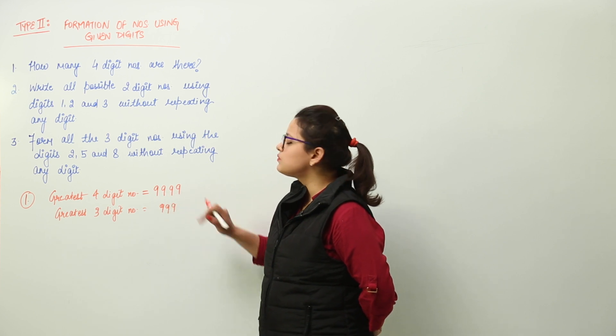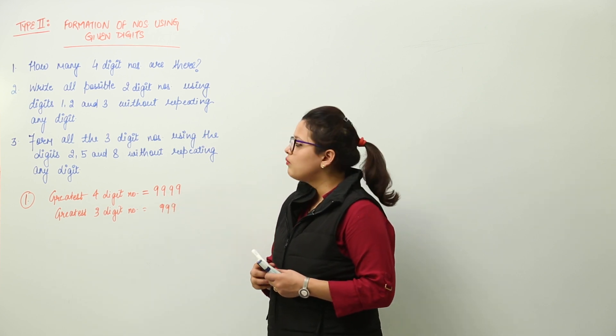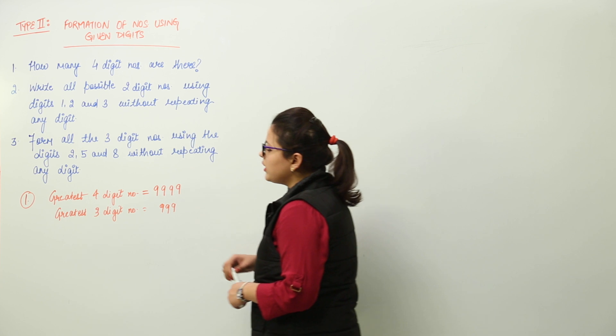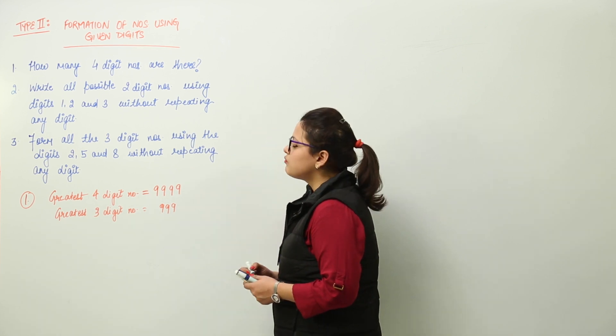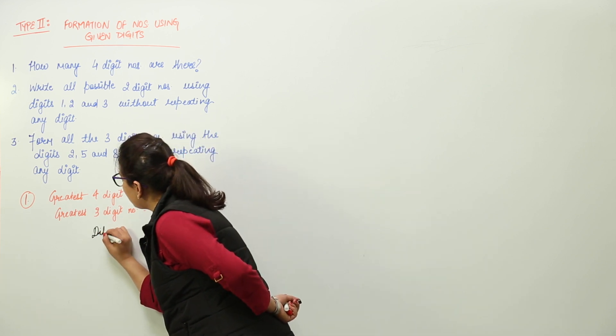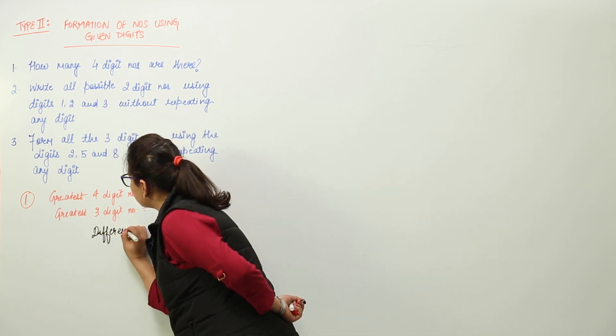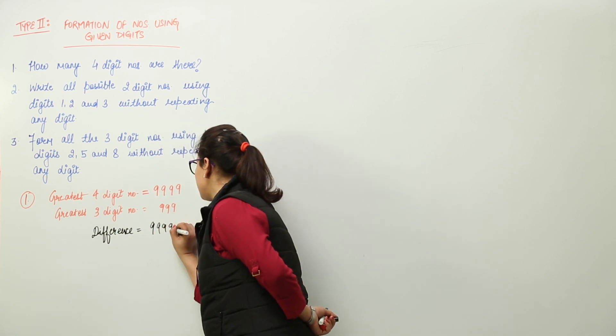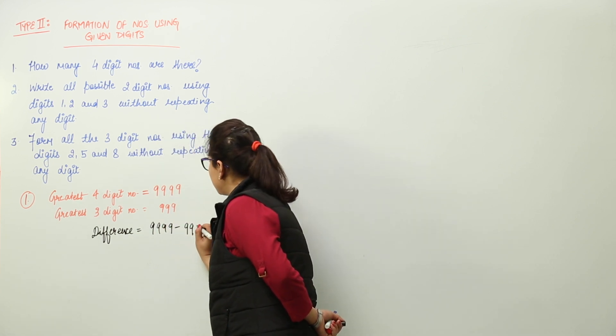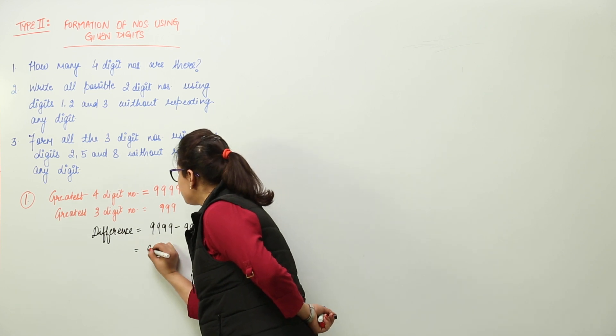The greatest three-digit and four-digit numbers are here. Now we will subtract the greatest three-digit number from the greatest four-digit number. That is, we find the difference: 9999 minus 999.